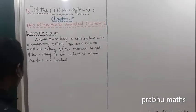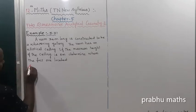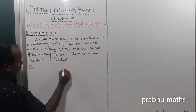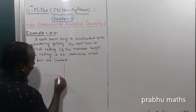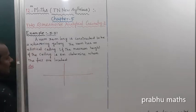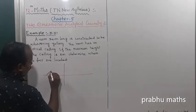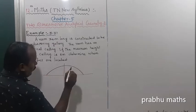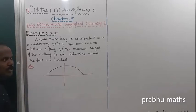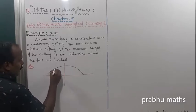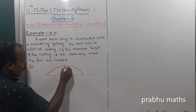So first of all, let us set up the coordinate system. The room is located by an elliptical perimeter. The total room length is 34 meters, so A equals 17, and the maximum height B equals 8 meters.